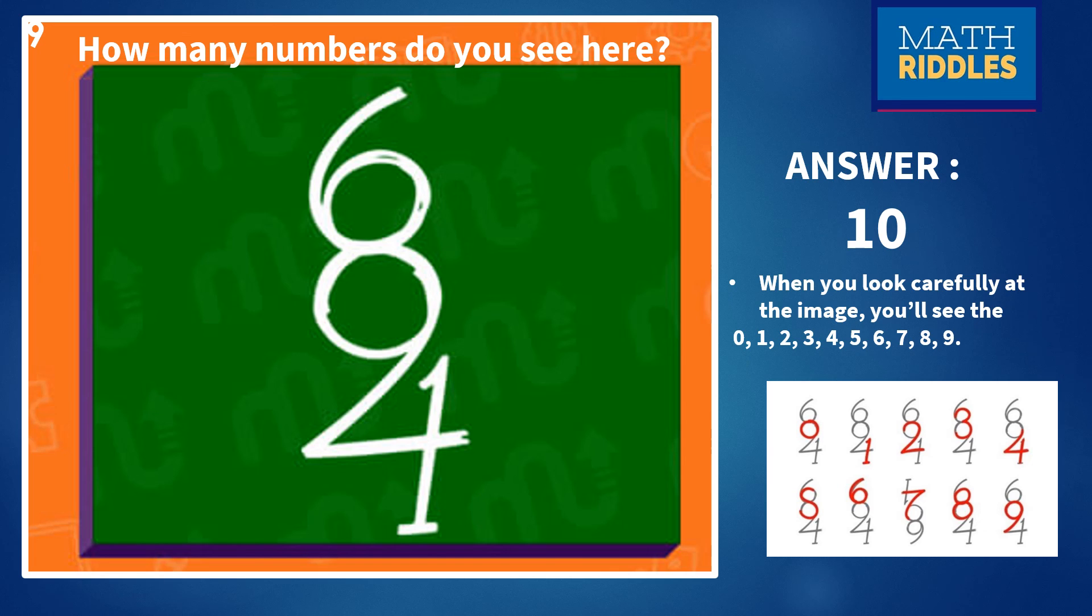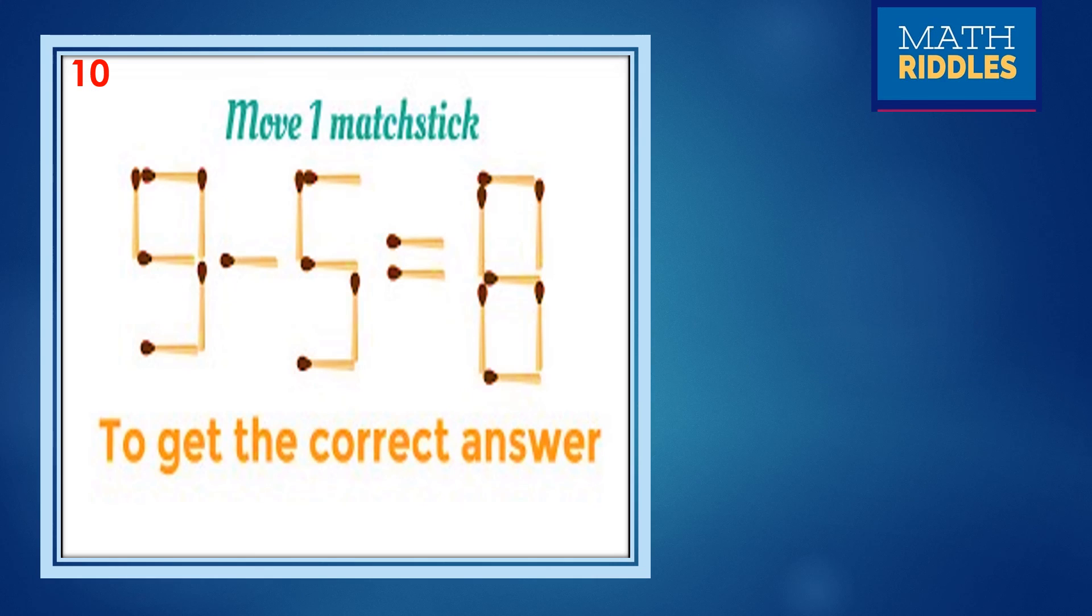Hope you are enjoying all these riddles. And the last question is, you observe this equation, 9 minus 5 is equal to 8. We use the matchsticks here. You use only one matchstick so that you should get the correct answer. The equation should be satisfied. So move only one matchstick. You can draw in your book and check. Or if you have the matchsticks, you can take it and you can try. Move only one matchstick. Give a pause and try it again. You will get the answer.